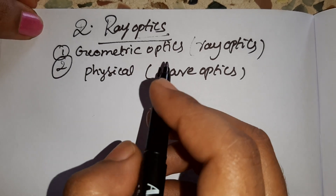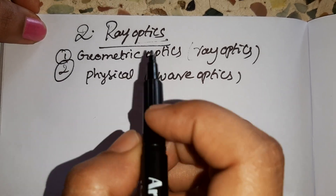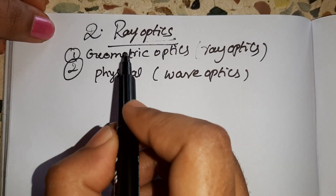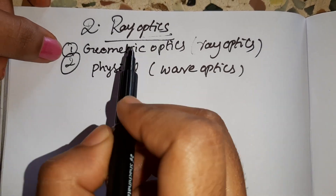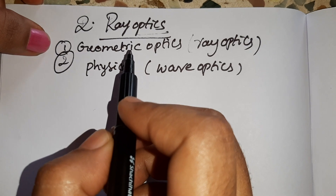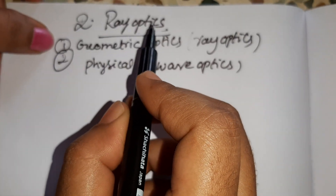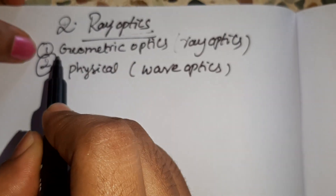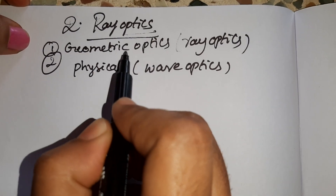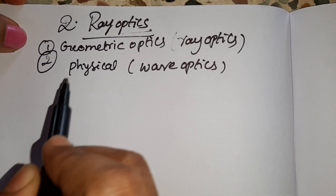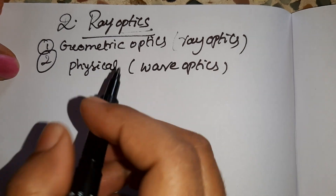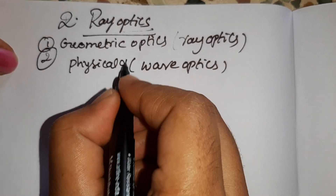Hello everyone. In this video I am going to discuss Ray Optics. Optics is nothing but the study of light. There are two types in Optics: the first one is Geometric Optics, and the second one is Physical Optics.